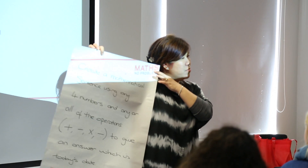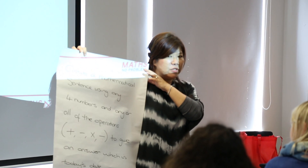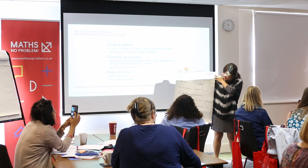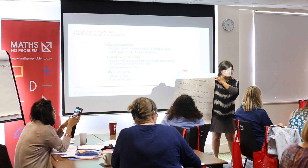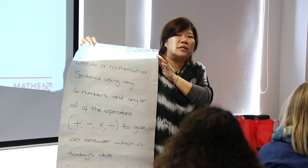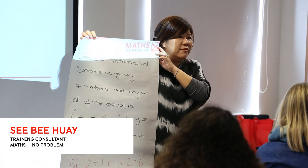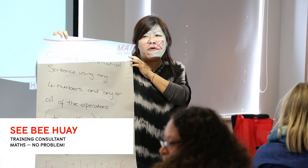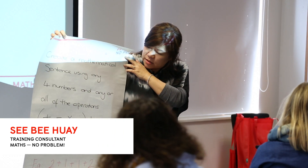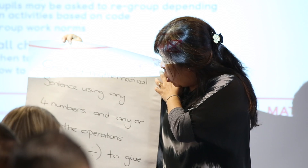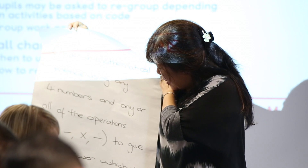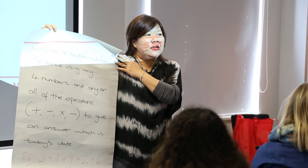Do you use the phrase 'mathematical statement' or 'mathematical sentence'? So we can say: create a mathematical sentence using any four numbers. Any four — it's up to you. You can say use numbers from zero to nine, use four nines, four fives — it's really up to you. And use any or all of the operations to form an answer that is today's date.